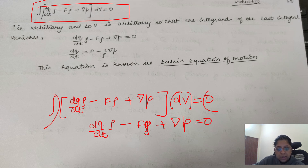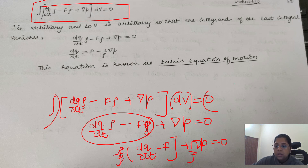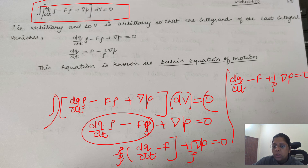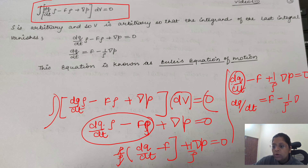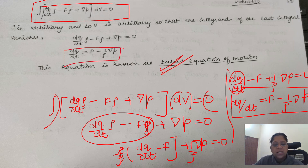अब इसमें से ρ common लेंगे: ρ(dq/dt − F) + ∇p = 0। Dividing by ρ: dq/dt − F + (1/ρ)∇p = 0। Therefore: dq/dt = F − (1/ρ)∇p. This is your dynamical equation of motion — Euler's dynamical equation. This derivation is complete and clear.